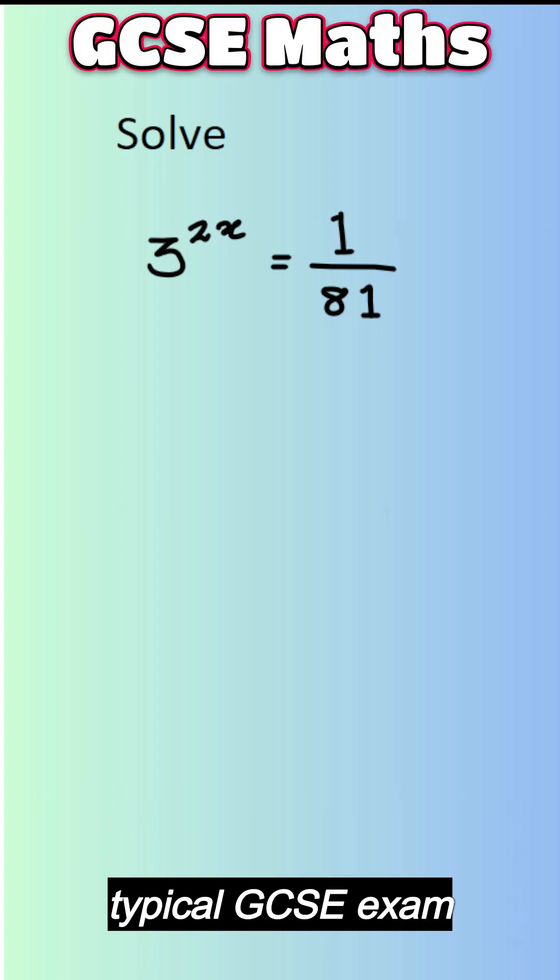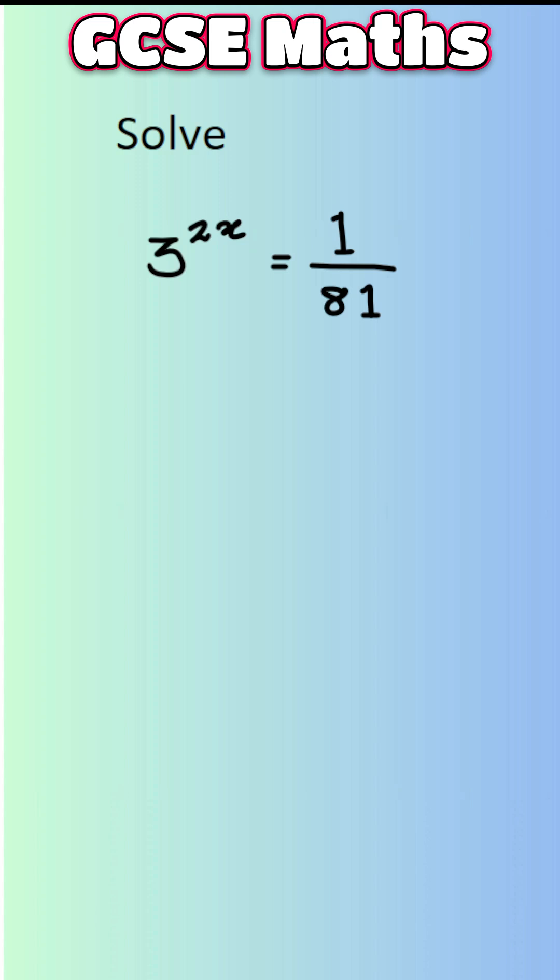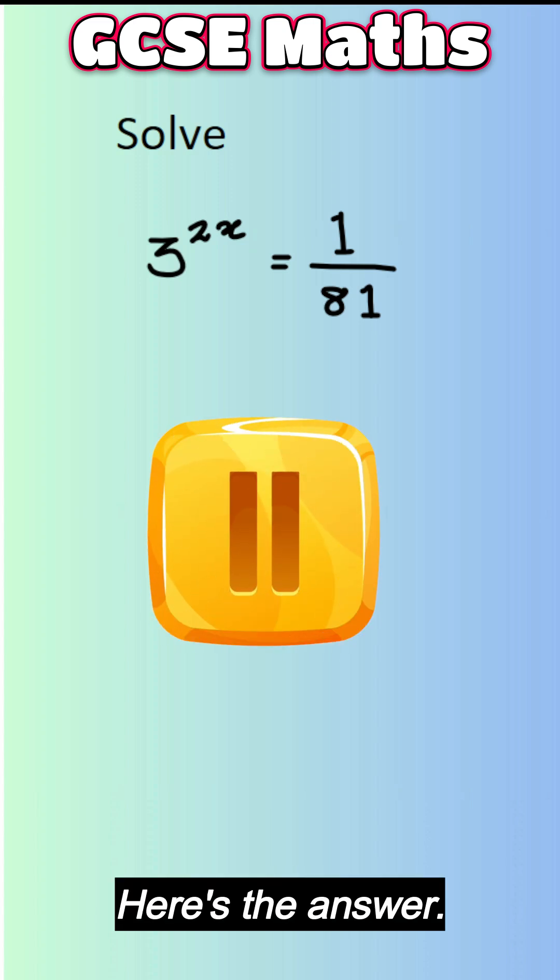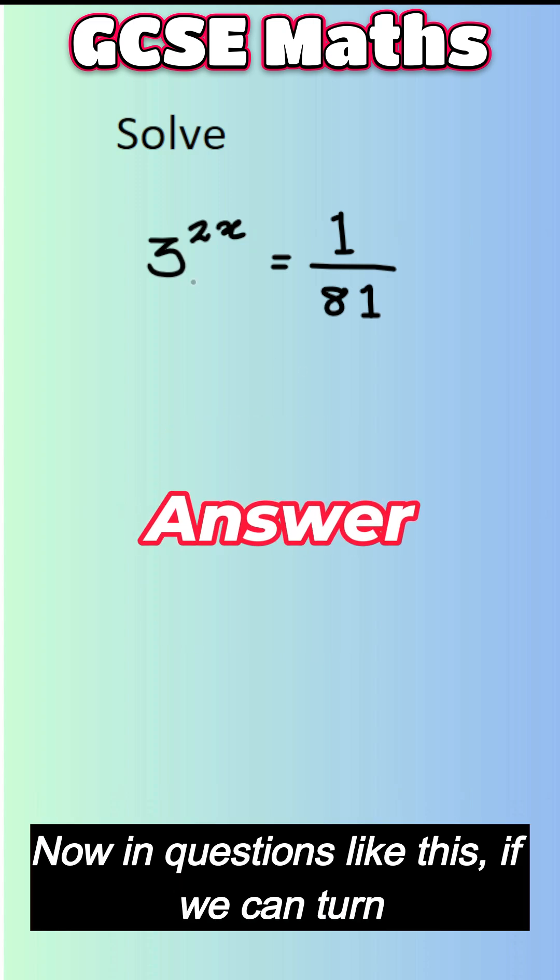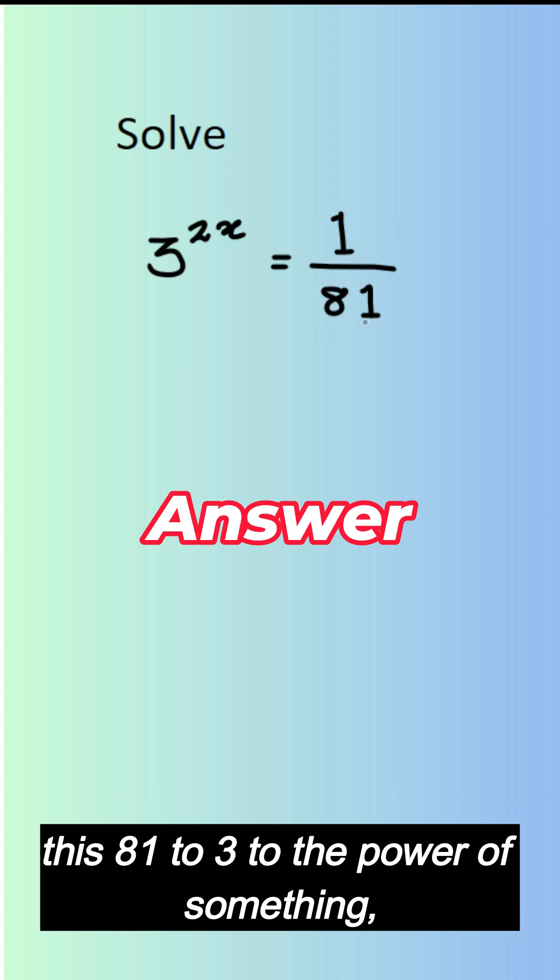Hello everyone, here's another typical GCSE exam question. Pause the video and give this a try. Here's the answer now. In questions like this, if we can turn this 81 to 3 to the power of something, we can easily simplify it.